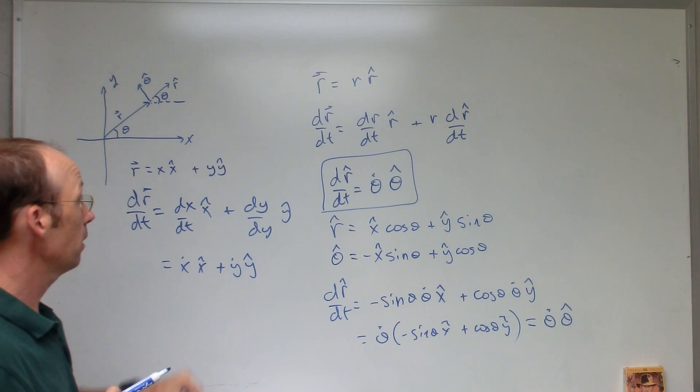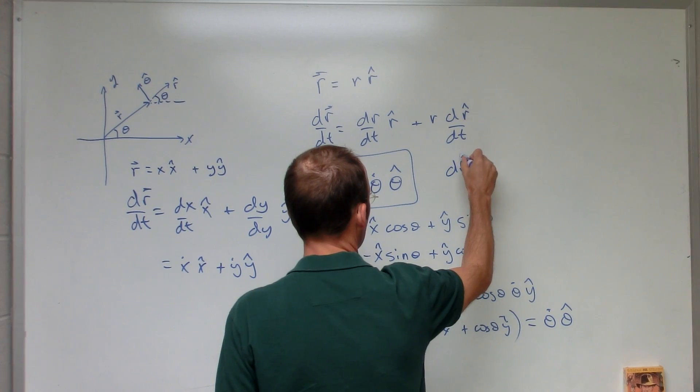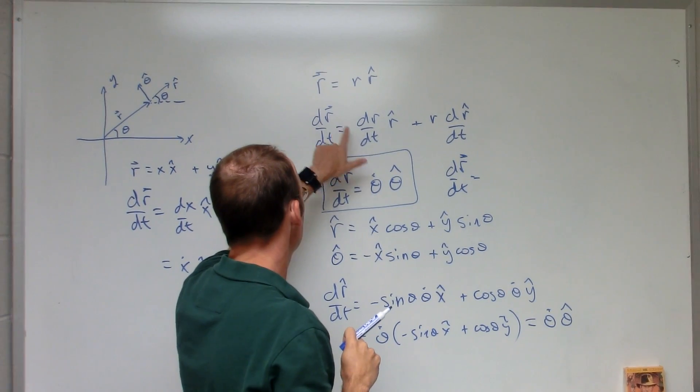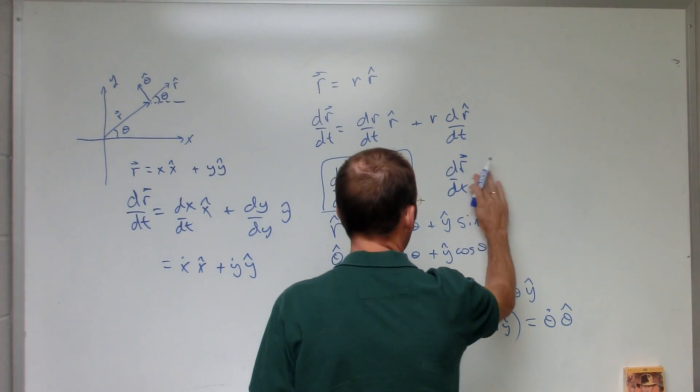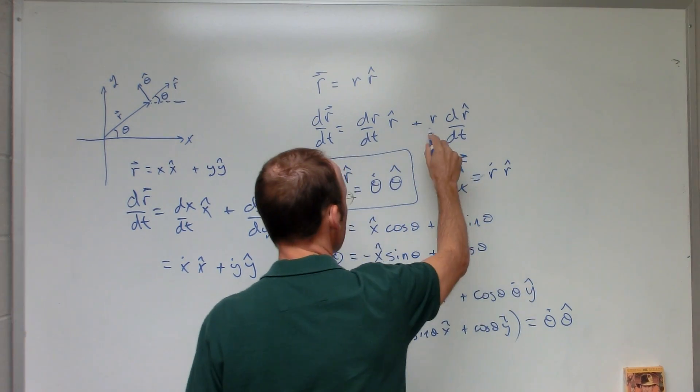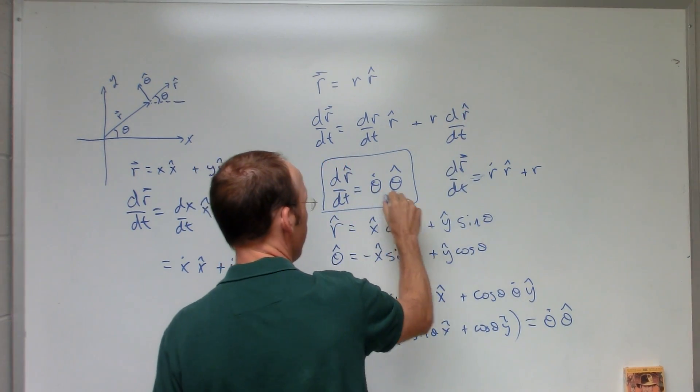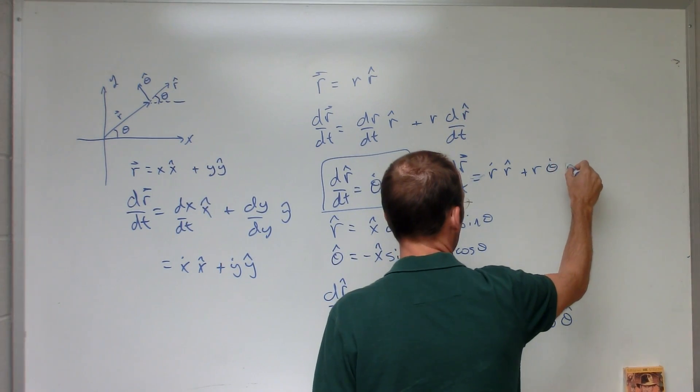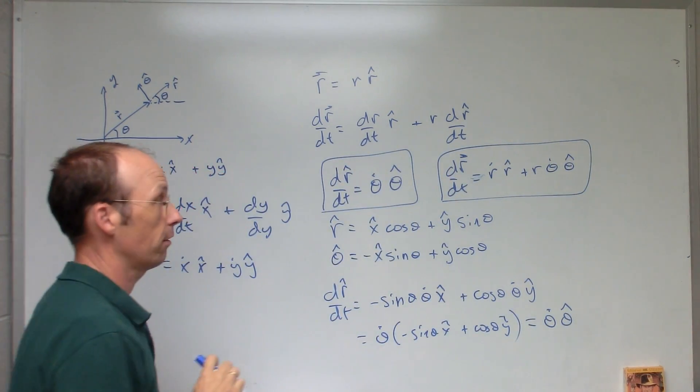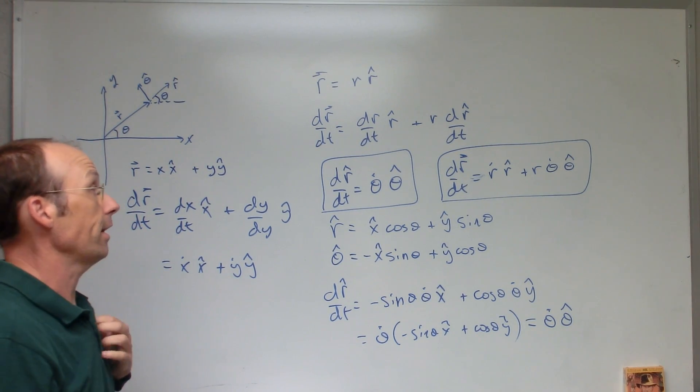So now I can put that in up here, and I get dr/dt equals dr value dt, which I'm just going to write as r dot r hat, plus dr hat. Plus now I have r, and dr hat/dt is this, theta dot theta hat. So that is my velocity in polar coordinates.